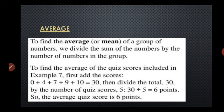To find the average of the quiz scores included in an example, suppose some example is there. How we will find the average? We will add all the scores, that is 30, and then divide by the number of scores. How many scores are there? Total 5.